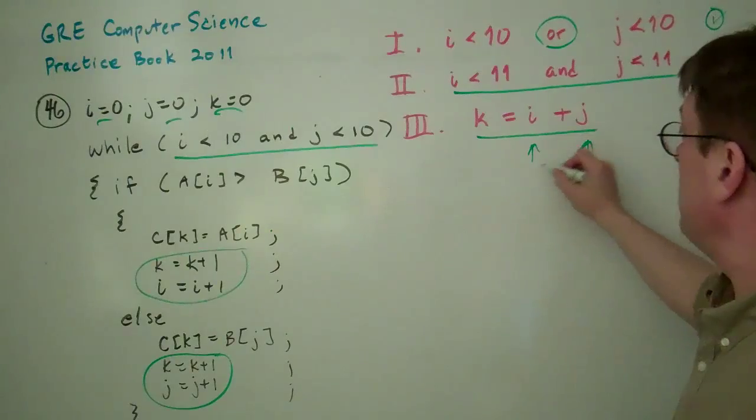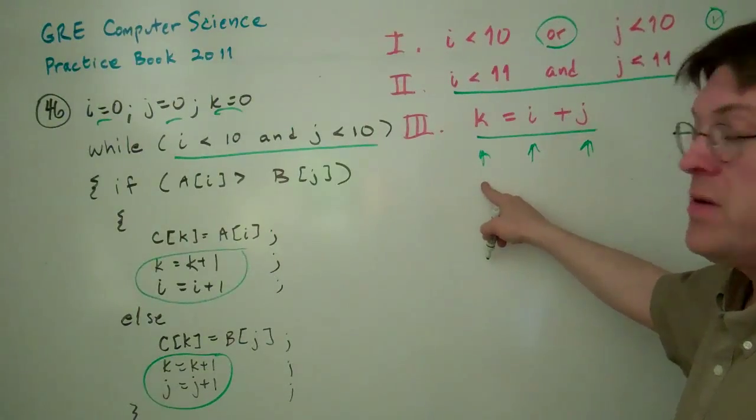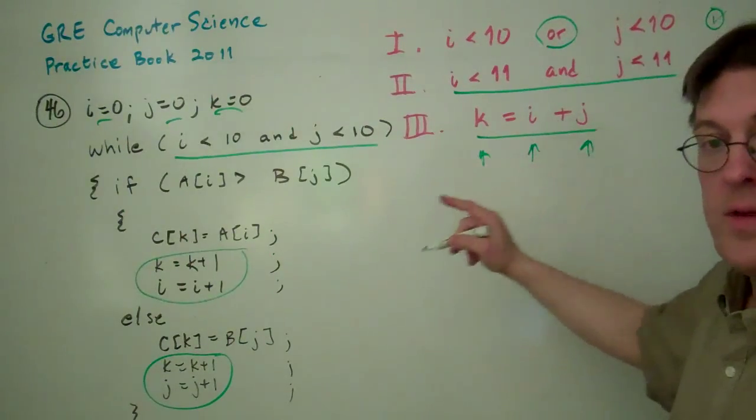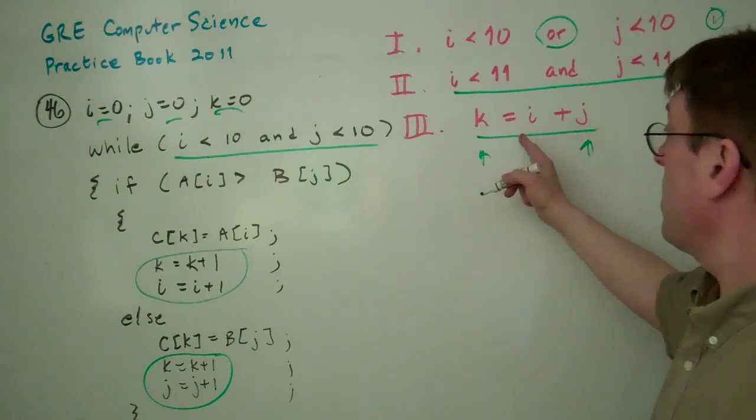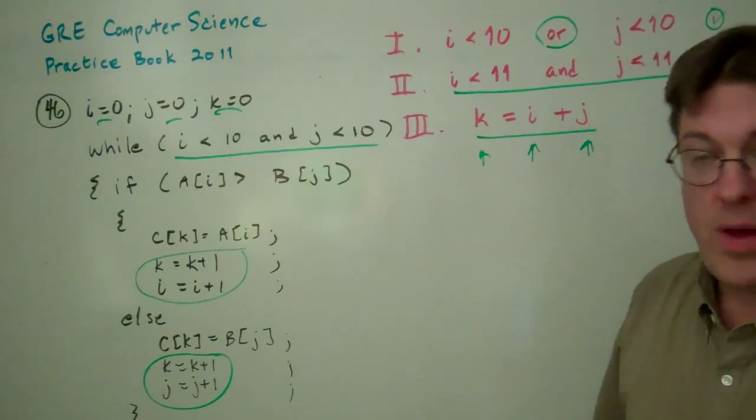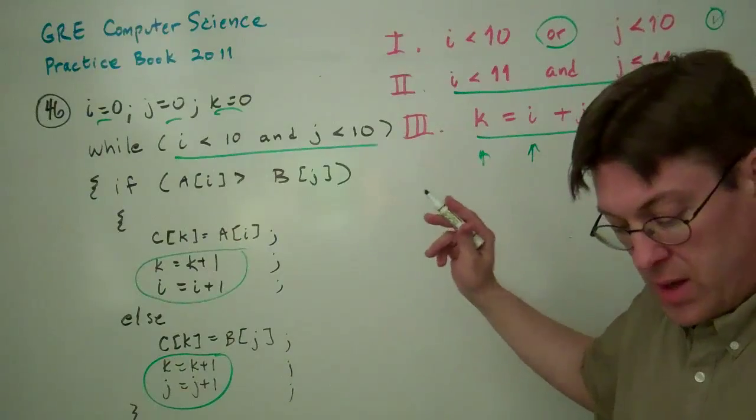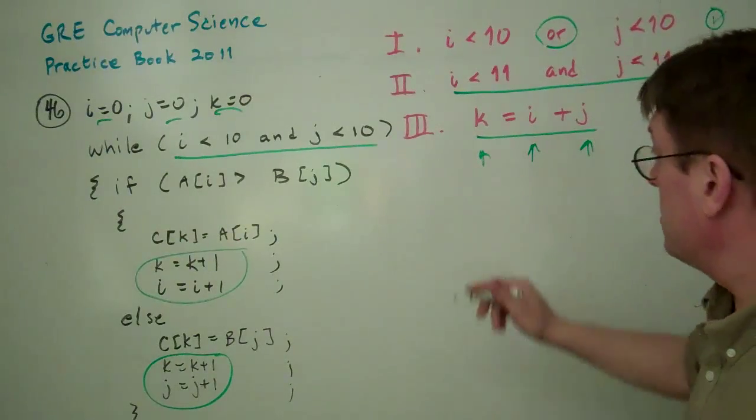Same thing for J. So it is true that K always equals I plus J. Every iteration of this loop at the end, at the beginning, and at the end. So this one's also true.